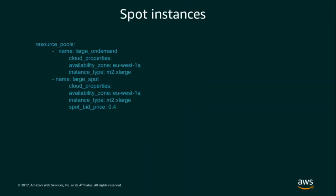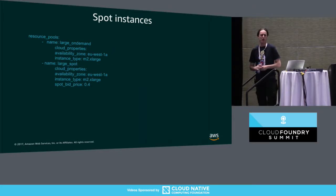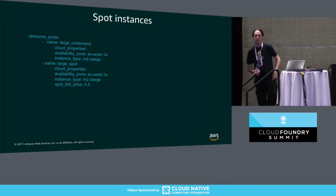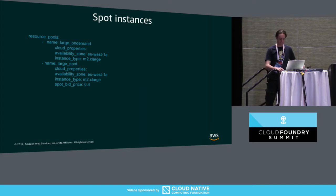Spot instances — the ability to launch platforms on a bid price. I just want to show you here: at the top is defining an on-demand instance, and immediately below that are spot instances, where you define the bid price, and when infrastructure becomes available at the price that you want, it launches and consumes those particular platforms.